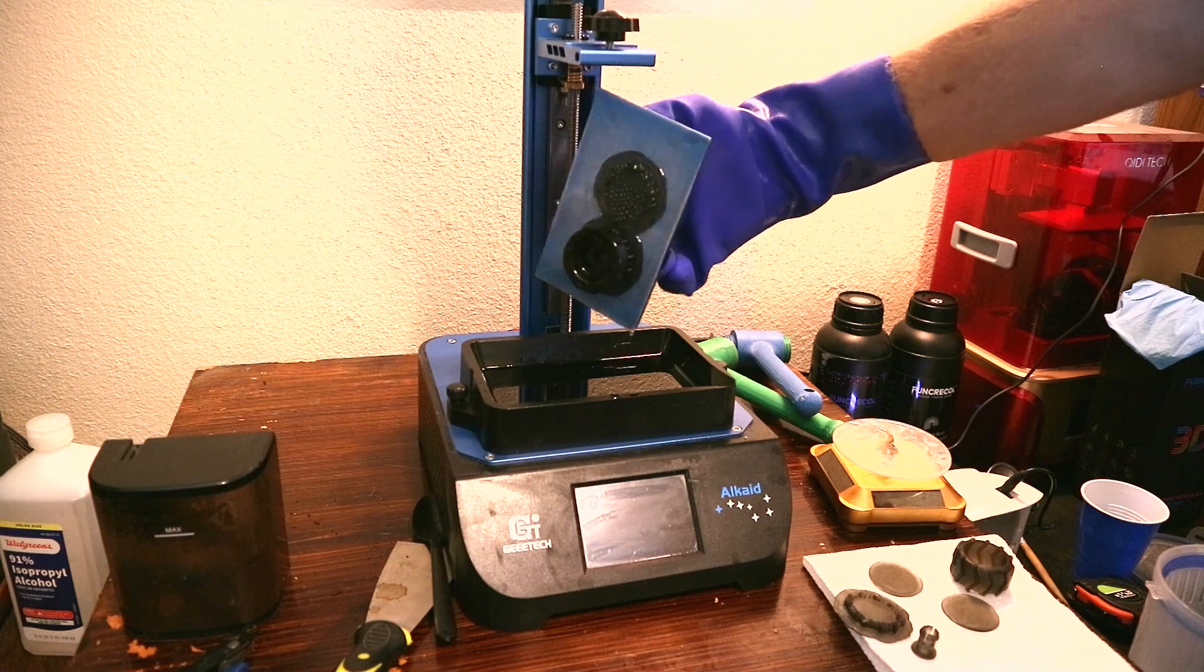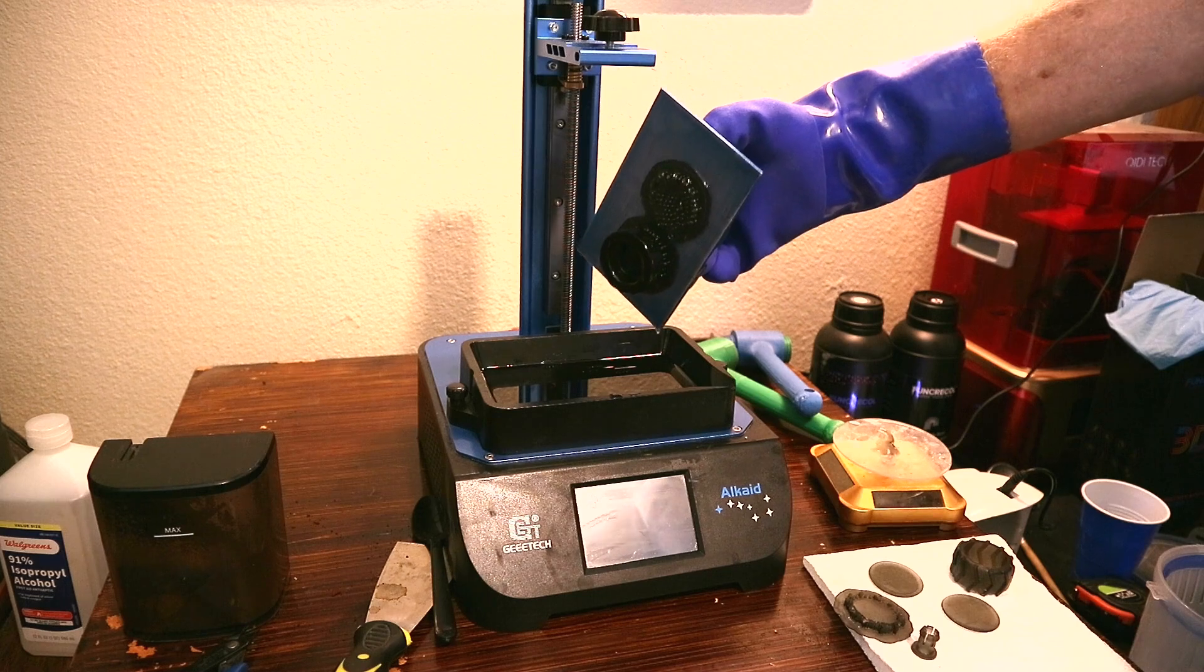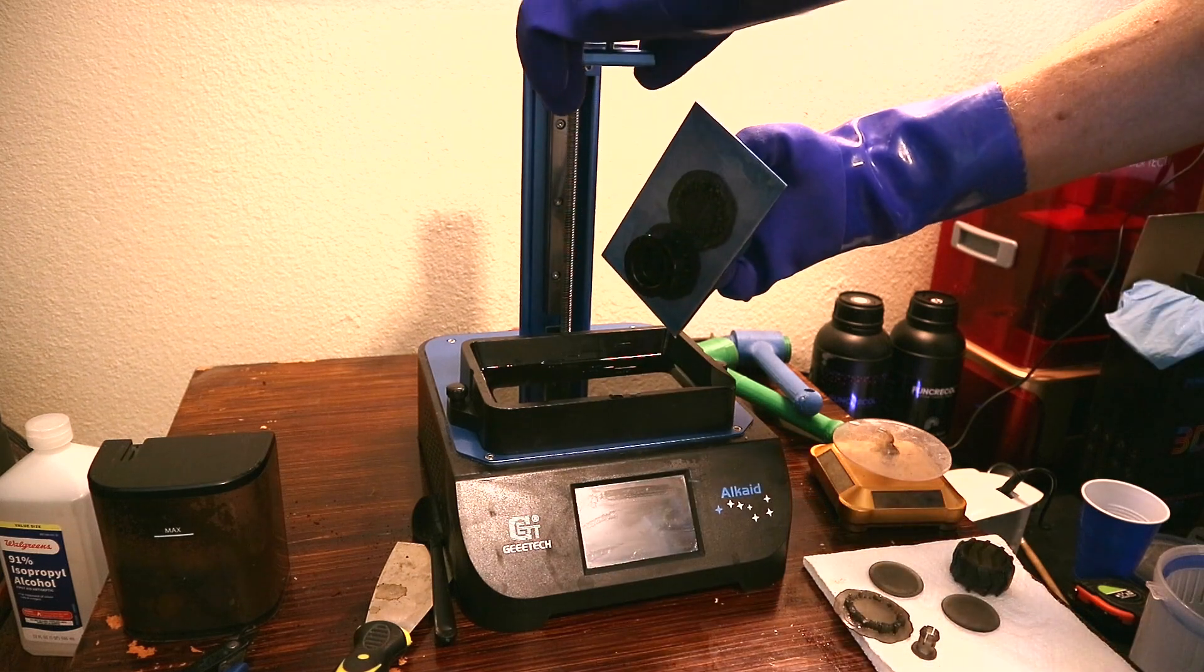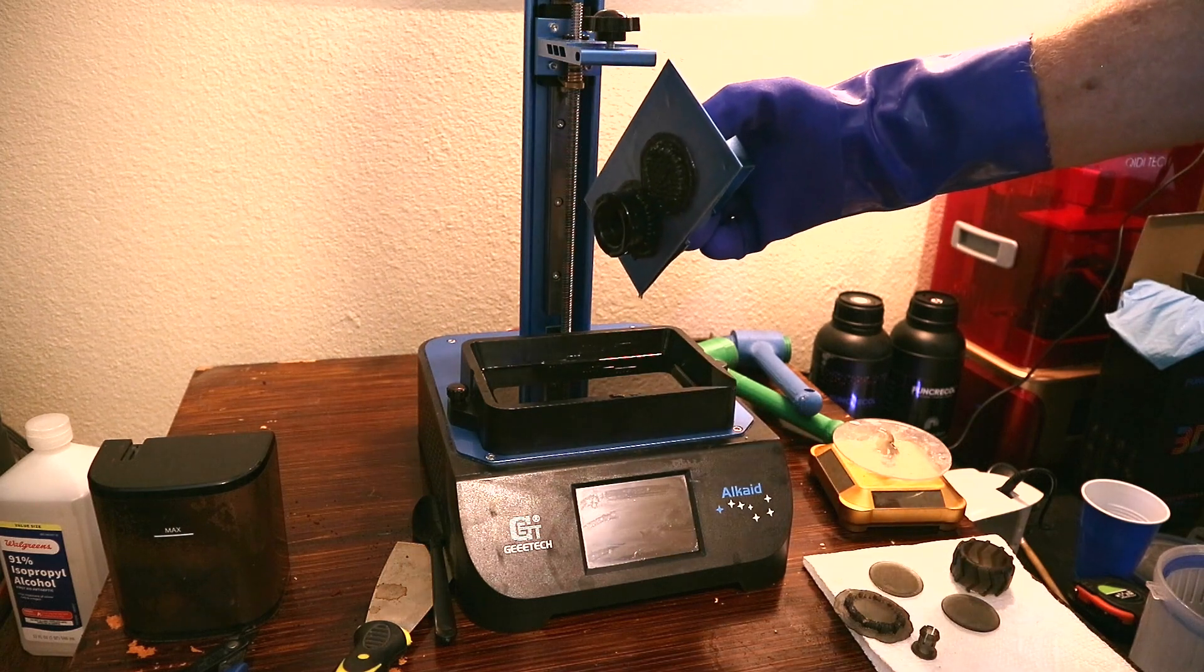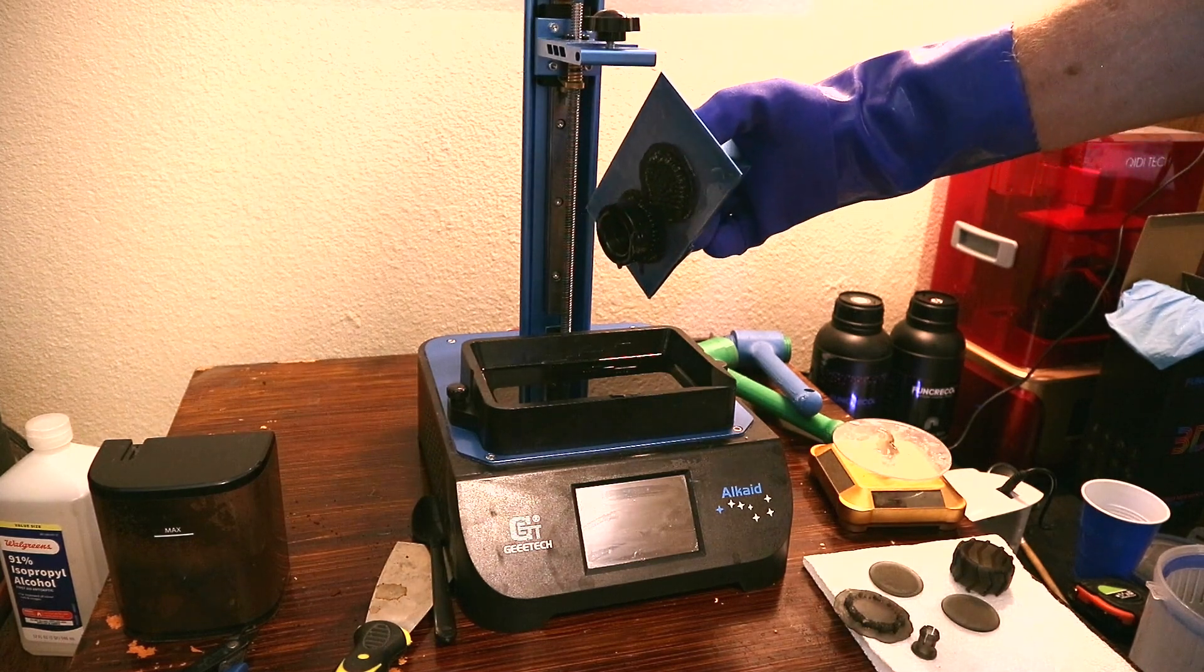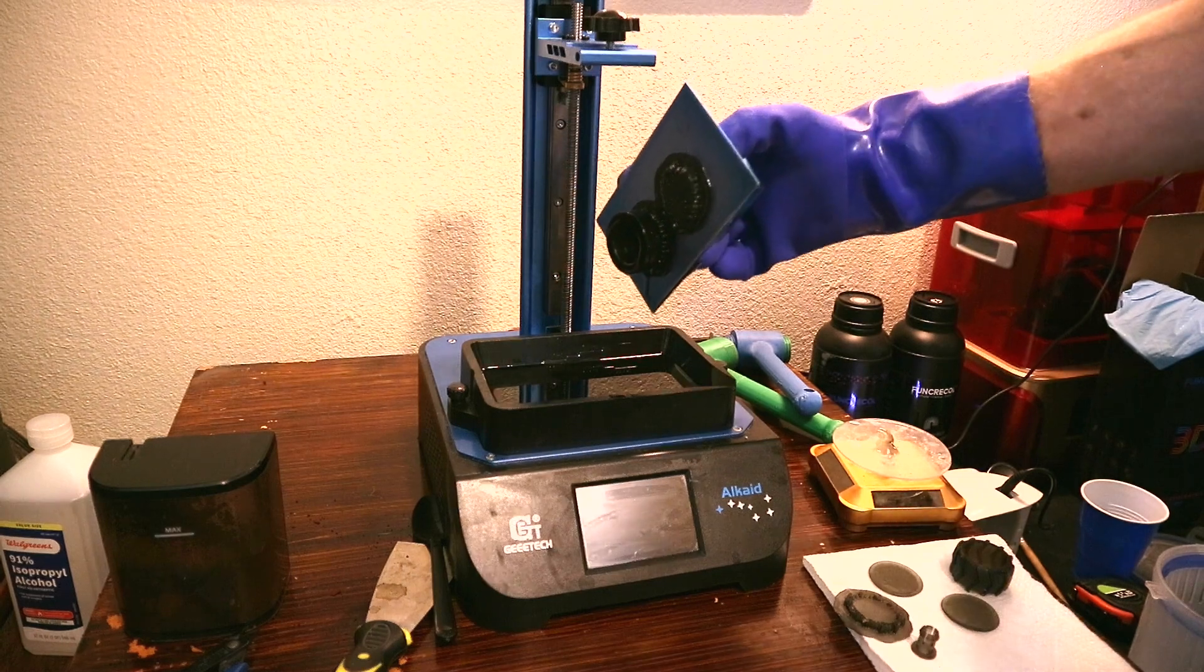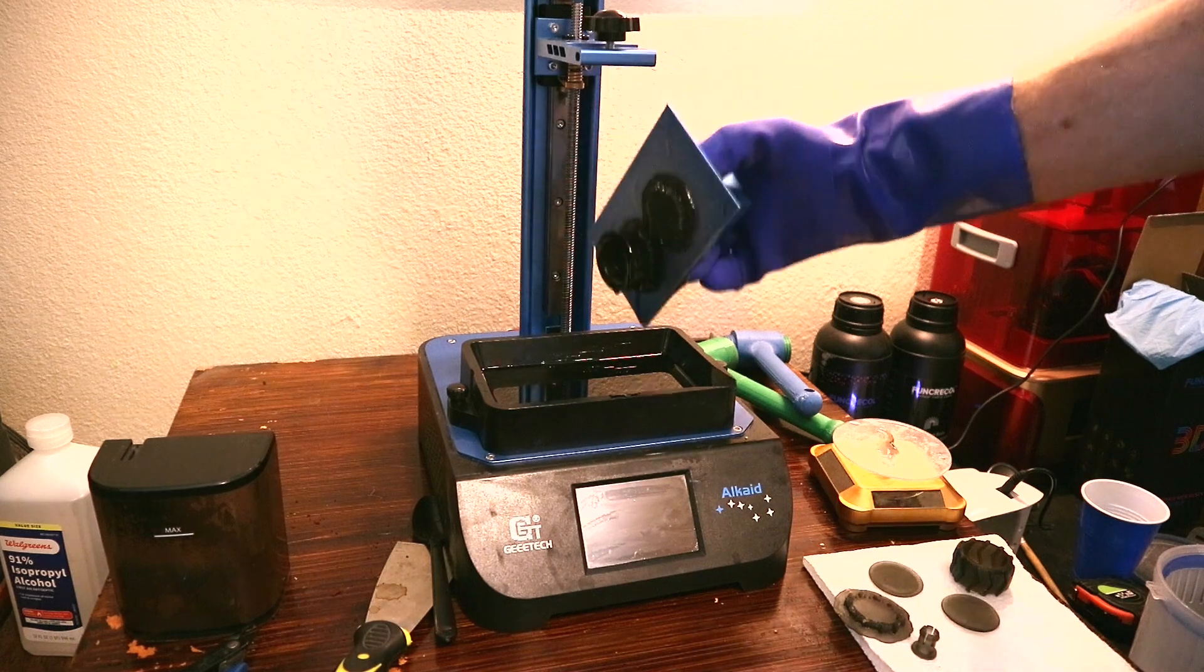Also, another thing worthy of note, I think, is because this resin sticks so well to the FEP, it takes a fair amount of force to pull it loose. And this Gitec Alcade printer, as much as I do like it, is not a heavy-duty printer. The parts are pretty lightweight. And I think it might not be the best printer for long-term printing of this type of filament. Had I realized that, I would have used my Kitec Shadow 5.5. It has dual rails. It's a much more robust printer than this one is.